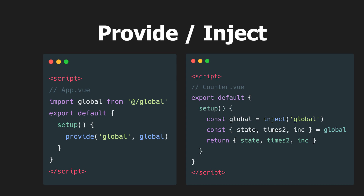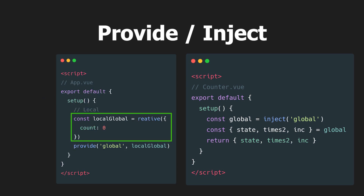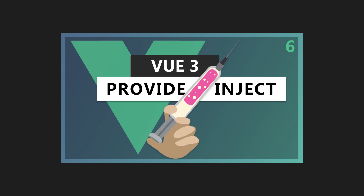This doesn't really provide a benefit though, since we can import the state directly. Provide and inject becomes really valuable when you create a reactive state inside a Vue component setup function and would like to share it with other child components. You can learn more about provide and inject from my other video where I go over this topic in more detail. Link in the description below.